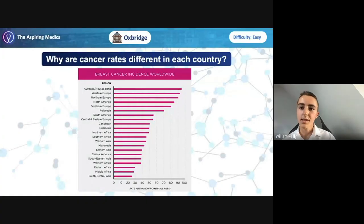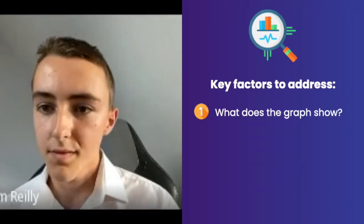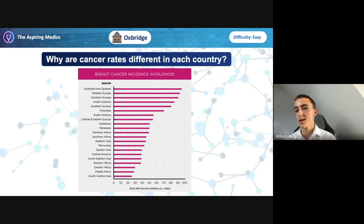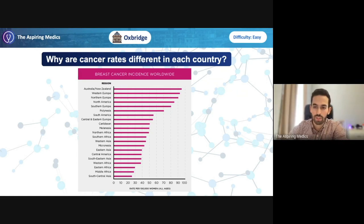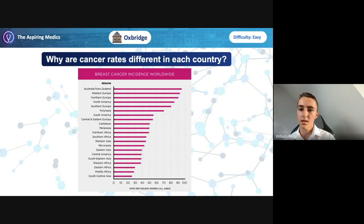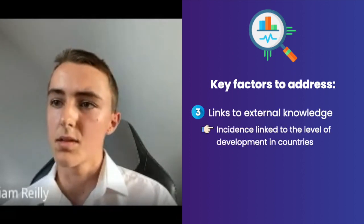It looks quite self-explanatory. It's a graph that shows the different rates of breast cancer in different regions around the world. We can see that in Australia and New Zealand they have the highest — around 95 women per 100,000 with breast cancer.